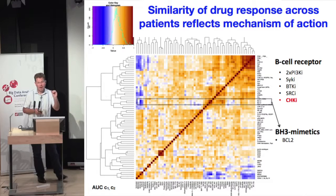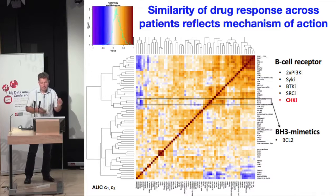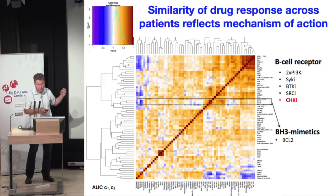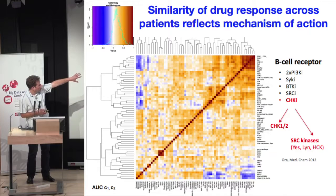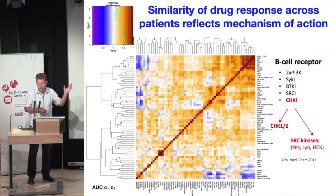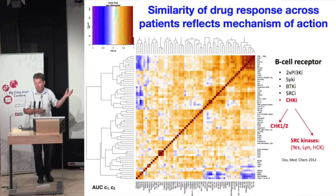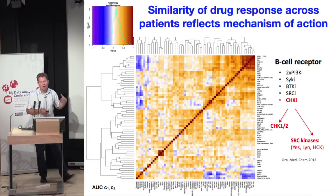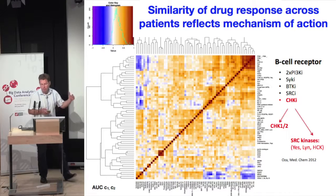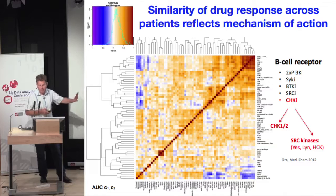Another encouraging aspect: if you cluster drugs by their similarity of response across patients, that drug clustering — which is purely phenotype-based — very precisely and accurately reflects the mechanism of action of those drugs. We can find clusters of drugs that mirror each other in their responses, which typically means they have very similar mechanisms of action. For instance, one cluster on top contains drugs targeting the B-cell receptor, and they cluster together. One drug in that cluster was thought to be a CHK inhibitor, but digging further into the data revealed it has an off-target effect on Src kinases, which most likely explains the off-target effect on the B-cell receptor.